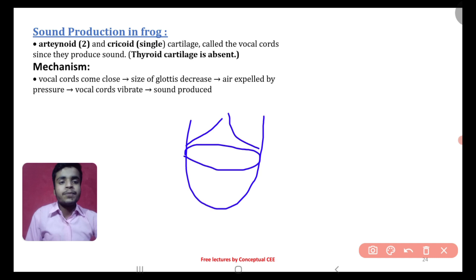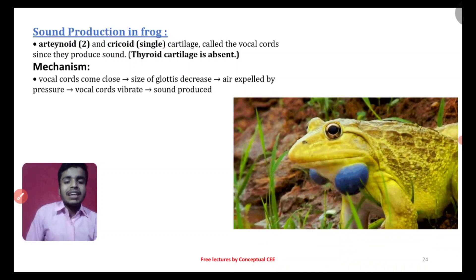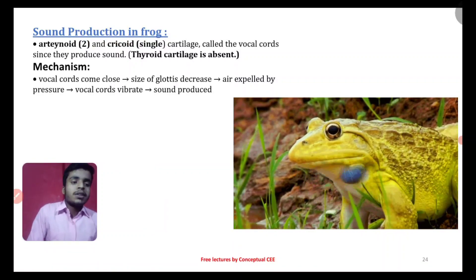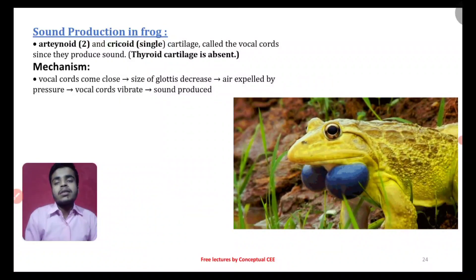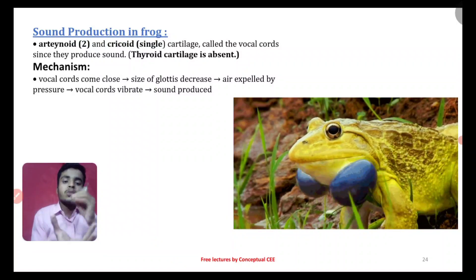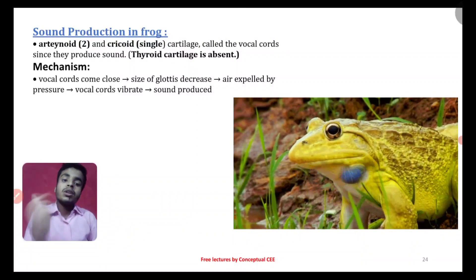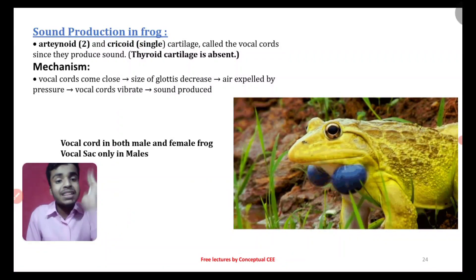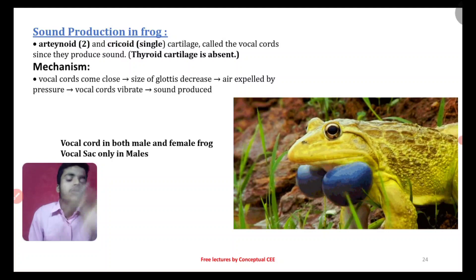Only male frogs produce sound — specifically croaking. The vocal cord is present in both male and female frogs, but the vocal sac is only present in males. The vocal sac acts as a sound box or resonator. Therefore, only males can do croaking, which is a sex call. Do not forget this important distinction.